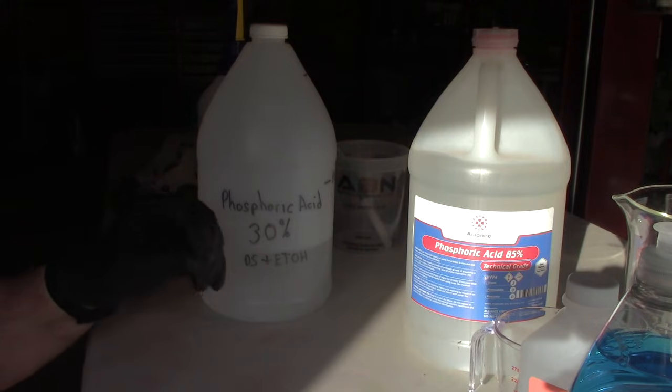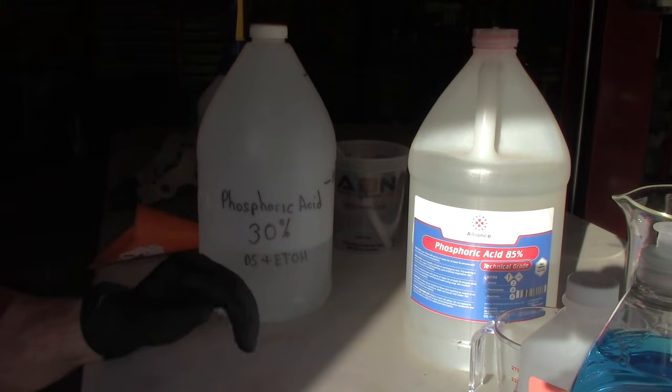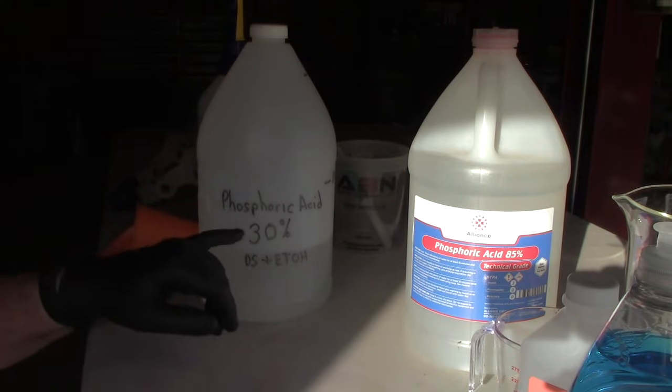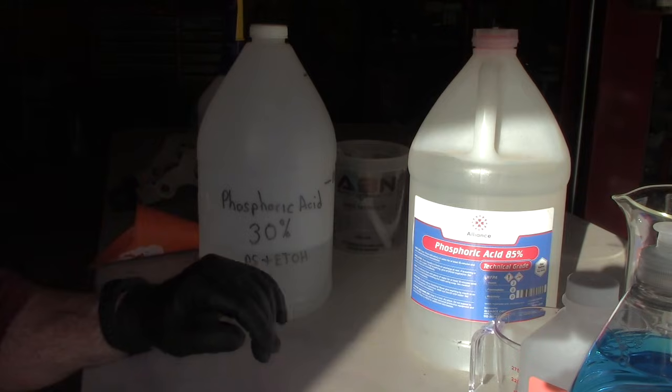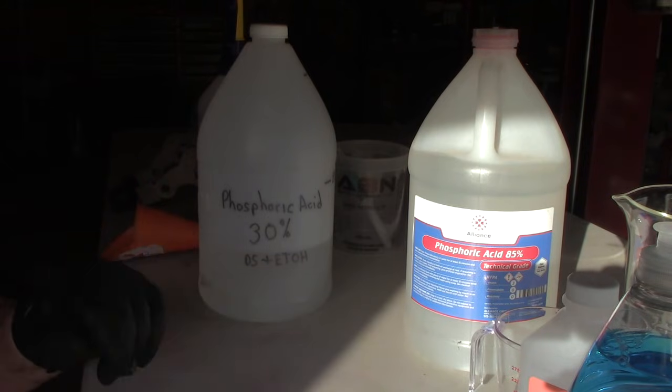That's how you end up with kind of a white powdery substance on whatever it is you're trying to treat the rust on. So 25 to 30 percent, and I wanted to show you quickly how I mix it up.